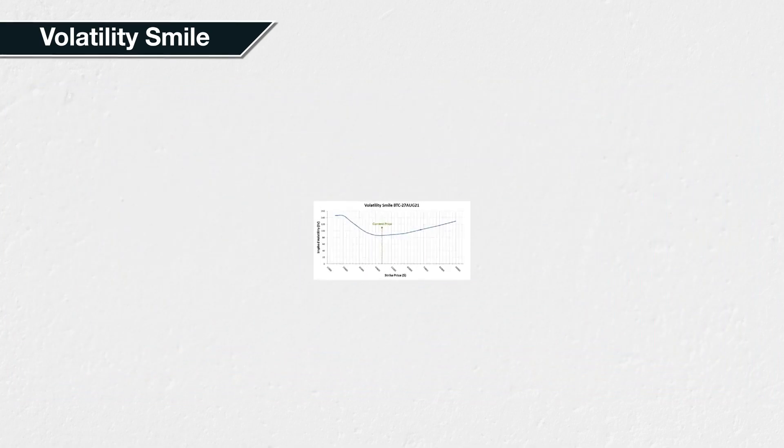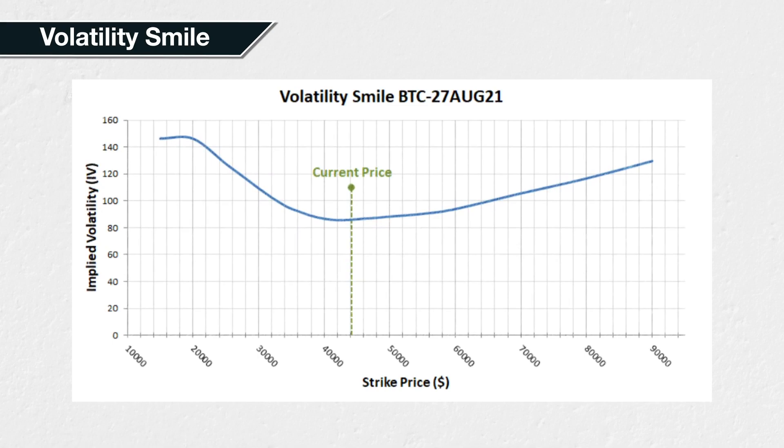If we plot these values in the same way as the previous theoretical example, we get this chart. As expected, we get a form of smile in the implied volatilities, meaning the options further away from the current price are more expensive than if they were all priced using the same implied volatility figure as the at-the-money strike. Traders are making adjustments compared to the Black-Scholes model to account for the model's limitations.